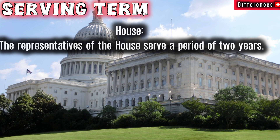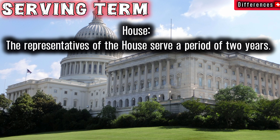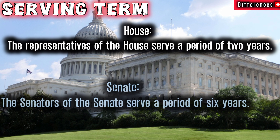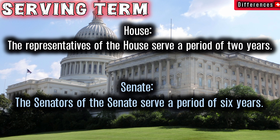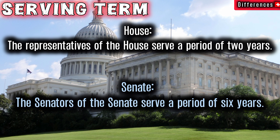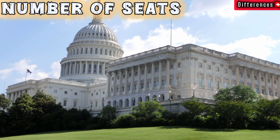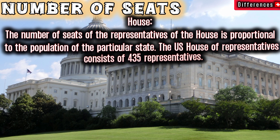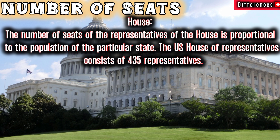Serving term: representatives of the House serve a period of two years, while senators of the Senate serve a period of six years. Number of seats: the number of seats in the House is proportional to the population of the particular state.